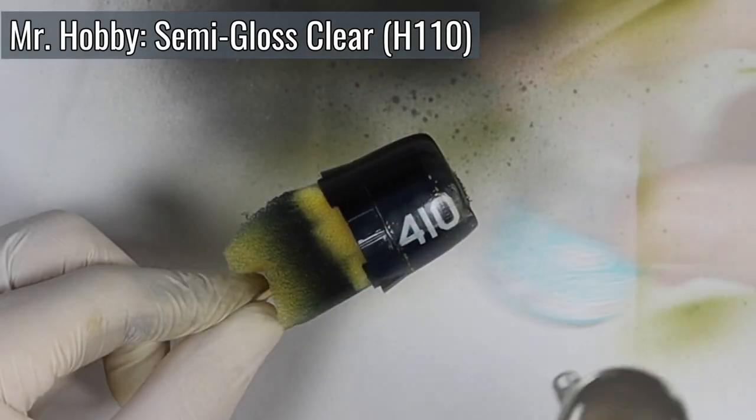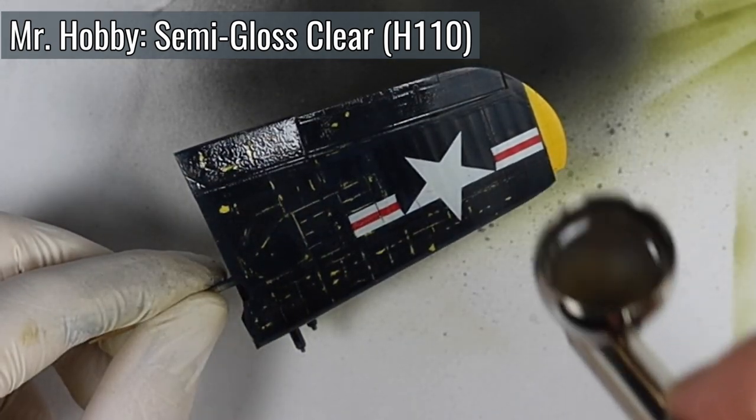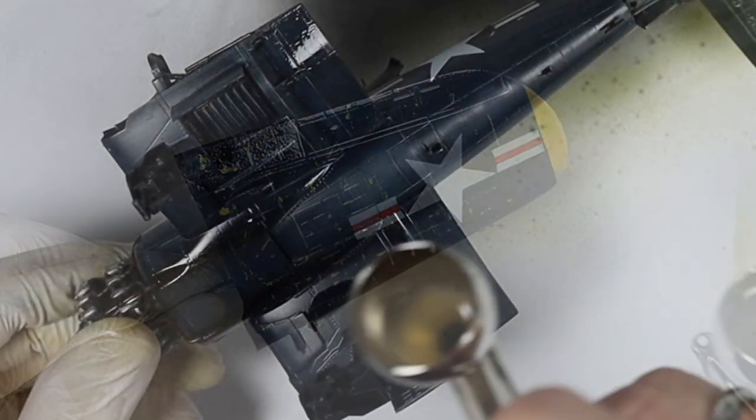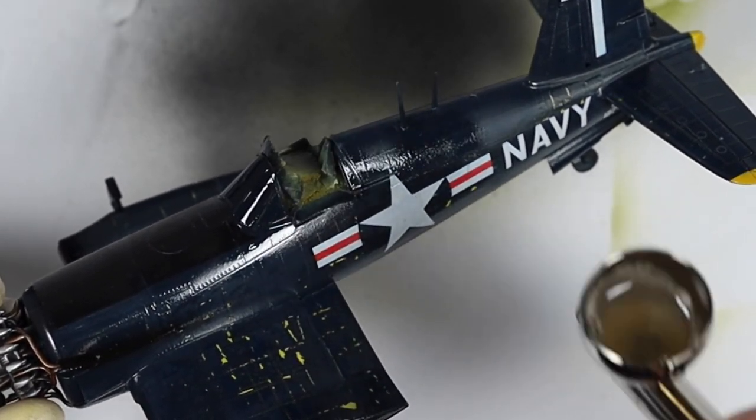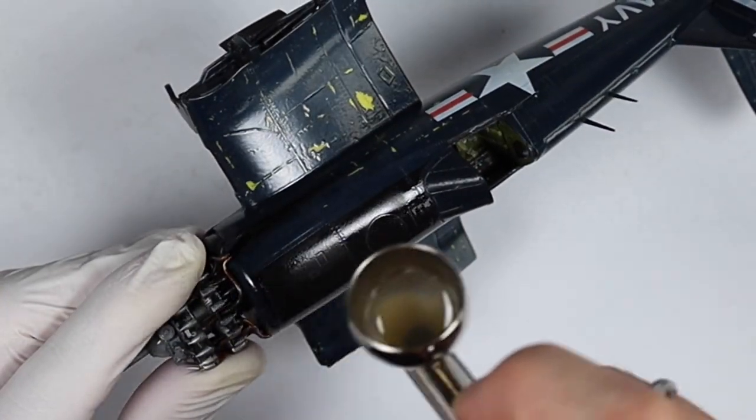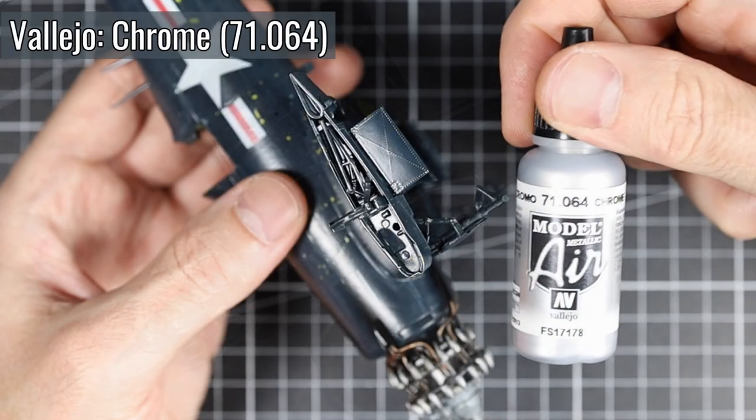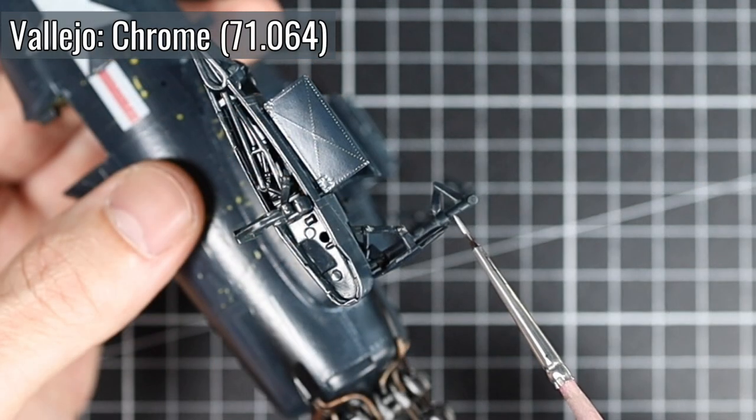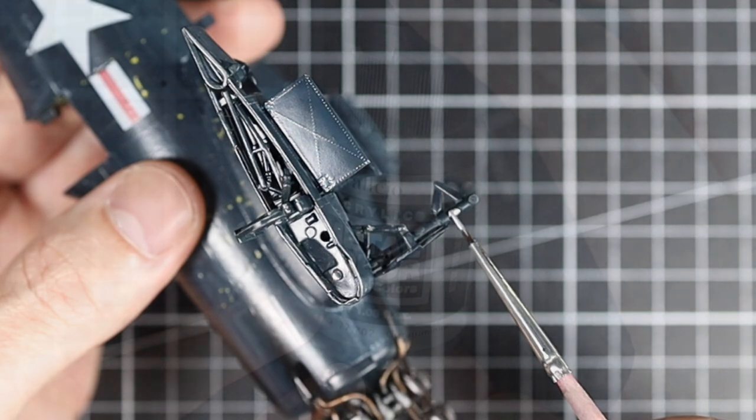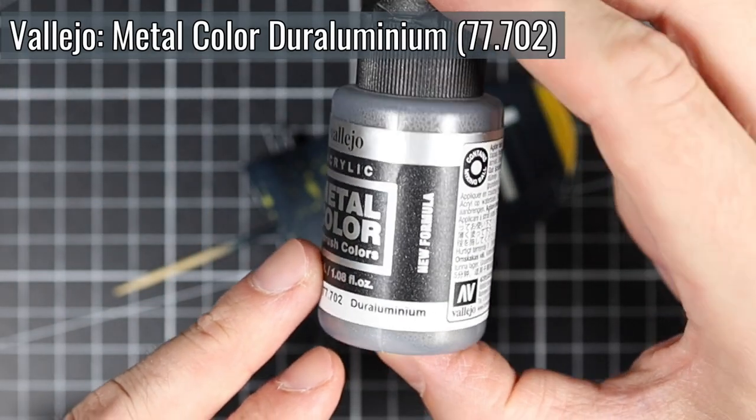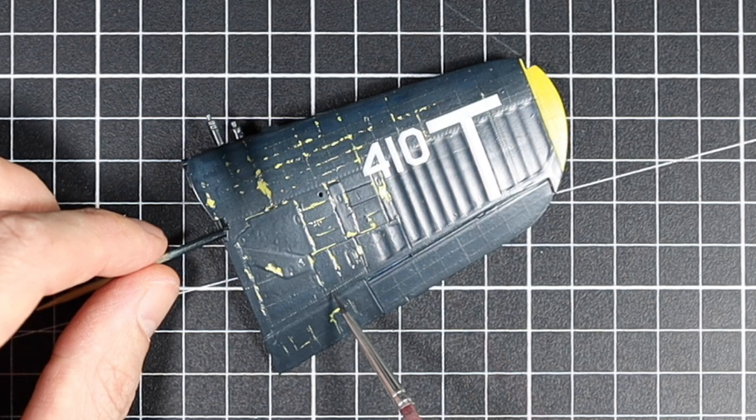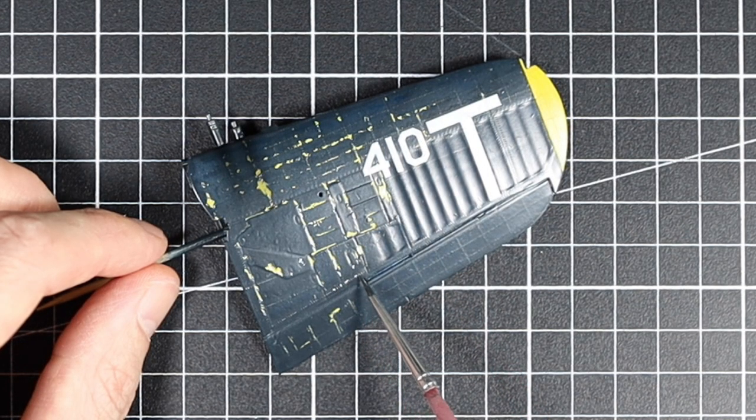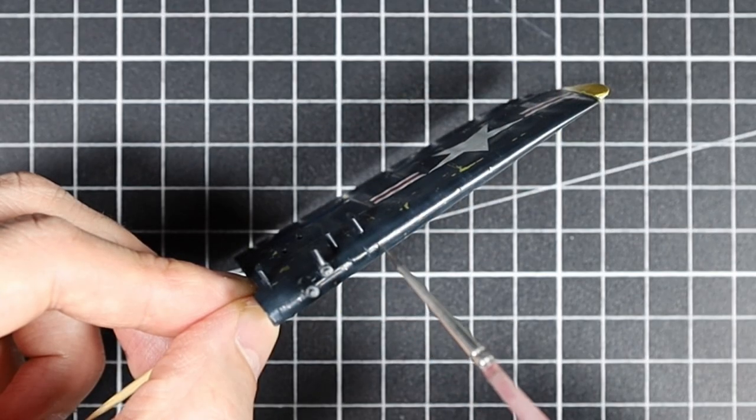The final layer of clear coat is already applied here. I used semi-gloss and added some flat clear coat to the areas that were too shiny. I apply metal chipping here after the model has been sealed with clear coat, so as not to lose the metallic shine.